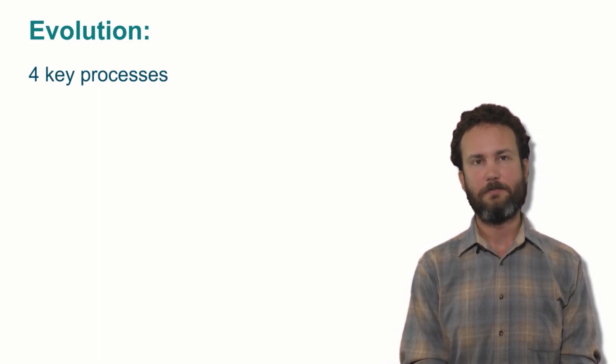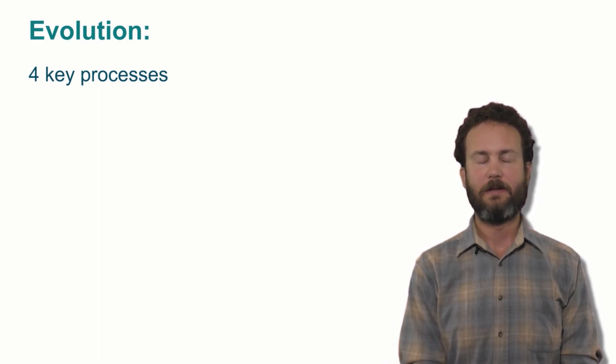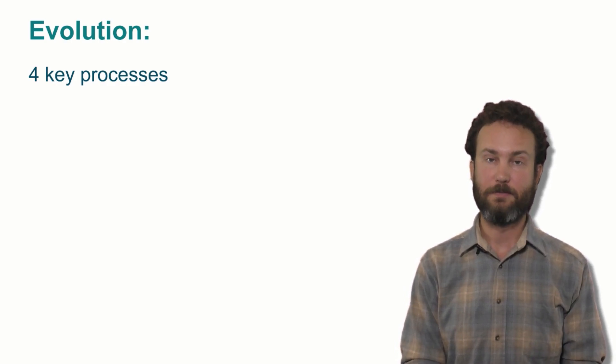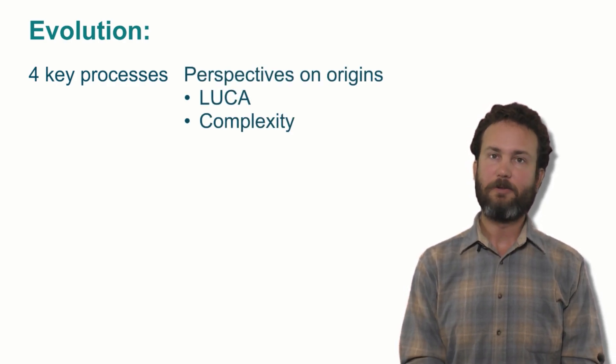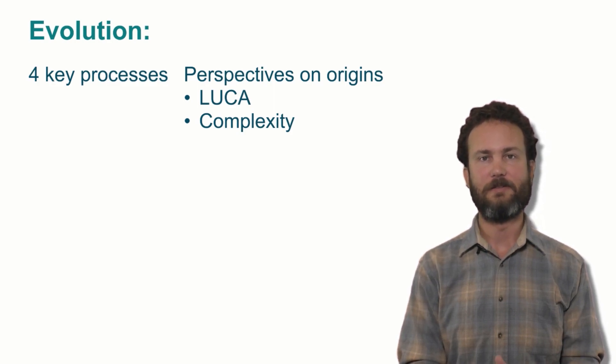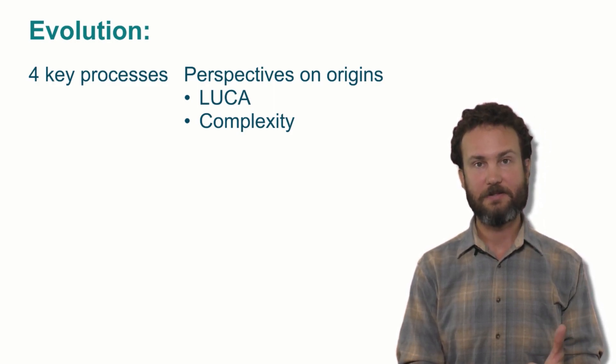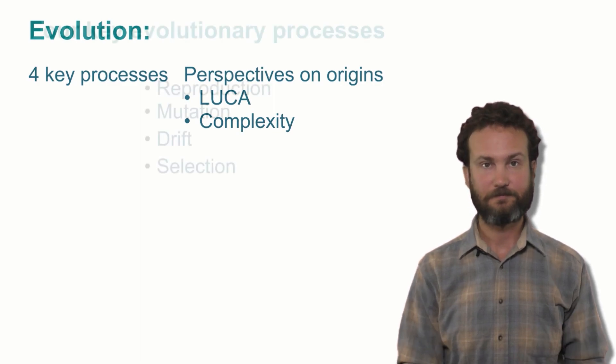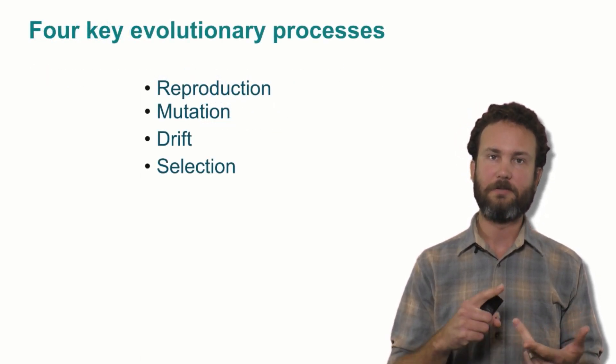So with that definition, what we'll be talking about today are four key processes that make evolution possible, and some implications for our perspective on the origin of life, particularly the last universal common ancestor and the complexity of life. The four key processes are reproduction, mutation, drift, and selection.